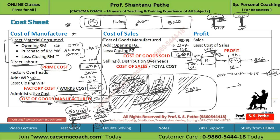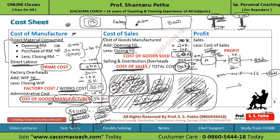We have to add the selling and distribution overheads to the cost of goods sold. Let's say selling and distribution overhead is Rs. 30,000. Adding this last gives us the total cost of sales, also called cost of sales. So cost of goods sold plus selling and distribution overhead equals cost of sales. There is always confusion among students between cost of goods sold and cost of sales — the difference is exactly the selling and distribution overhead.